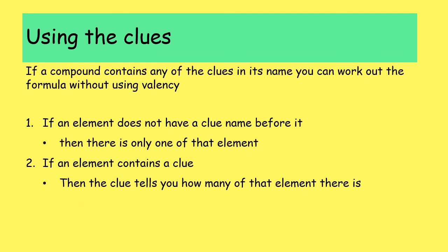If a compound contains any of the clue prefixes anywhere in its name, you can work out the formula without needing to use valency. Remember two things: any part of the name that does not have a clue means there is only one of that element; and if an element does contain a clue, the clue tells you how many there are of that element.